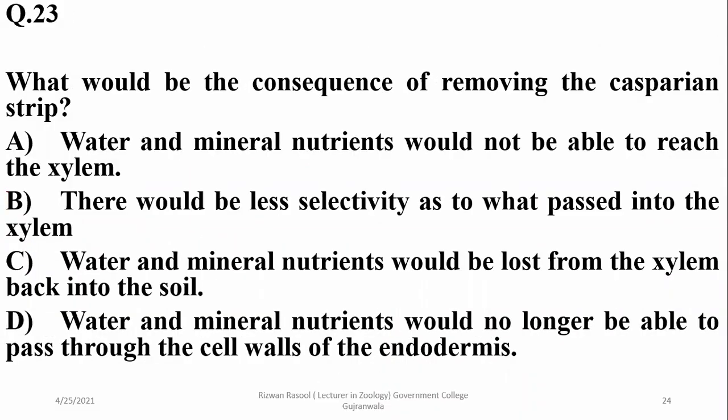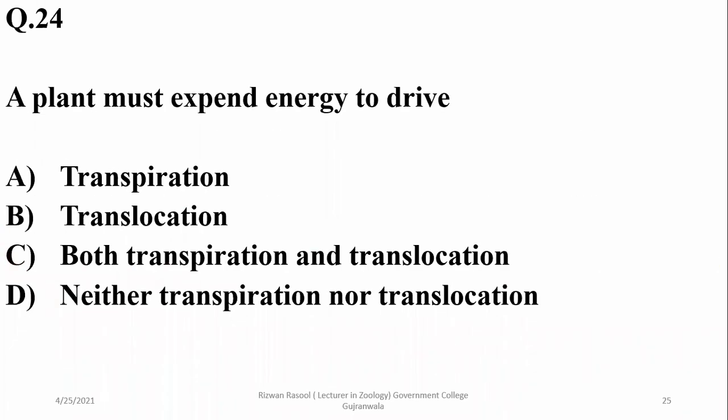Question twenty-three: what would be the consequence of removing the Casparian strip? The Casparian strip is a waxy layer covering the endodermis around the xylem. If removed, water and mineral nutrients would be lost from the xylem back into the soil, so Charlie is the answer.